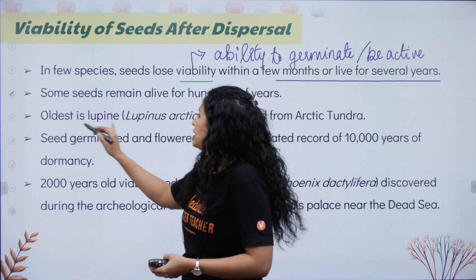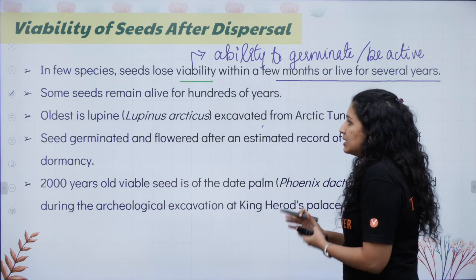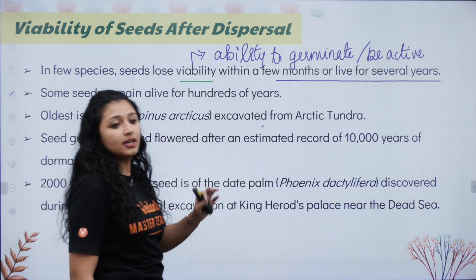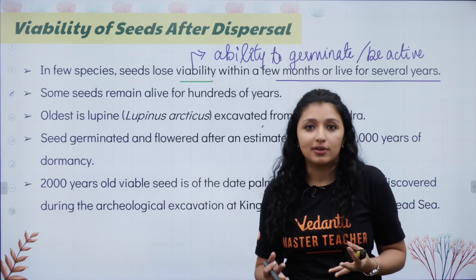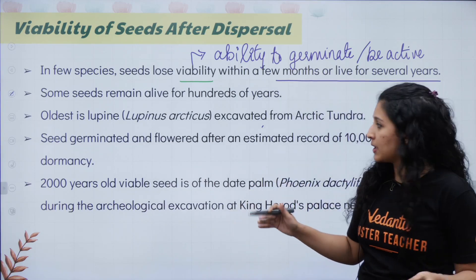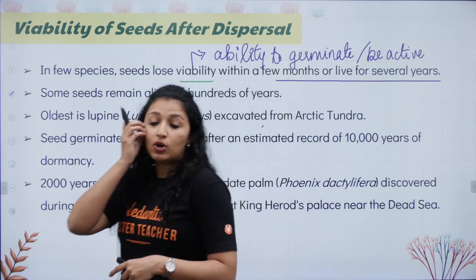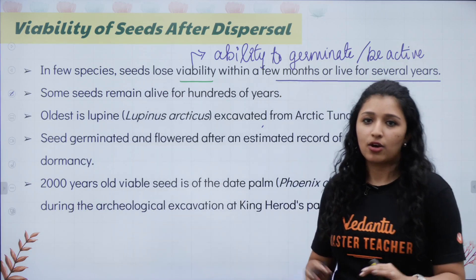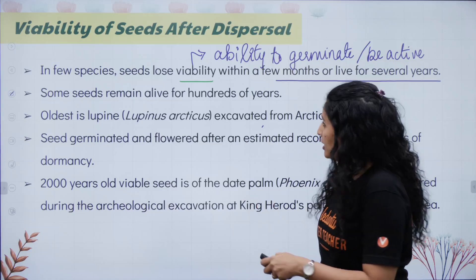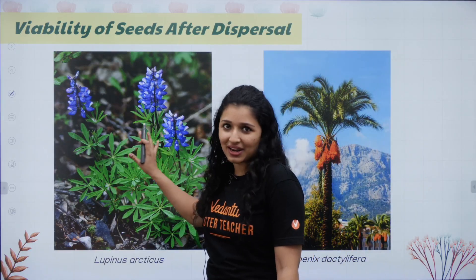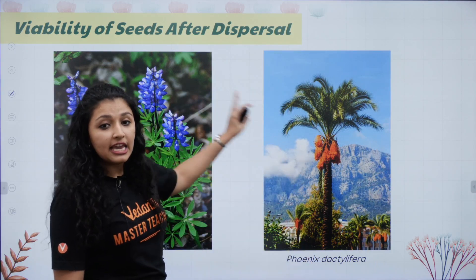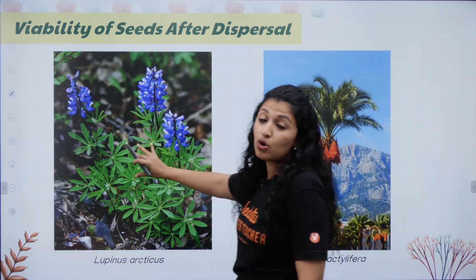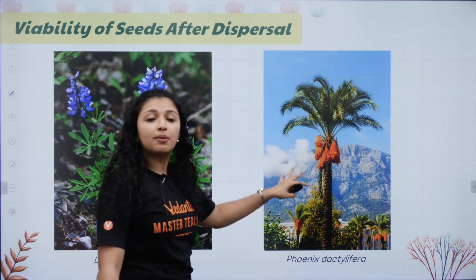Lupinus arcticus was excavated from the Arctic tundra. It had been stored for about 10,000 years, and when they sowed the seed it grew into a new plant. Another example is Phoenix dactylifera, a palm tree found near the Dead Sea in the Egypt region — its seeds were about 2,000 years old and were still viable. These two plants are famous examples of seed viability.